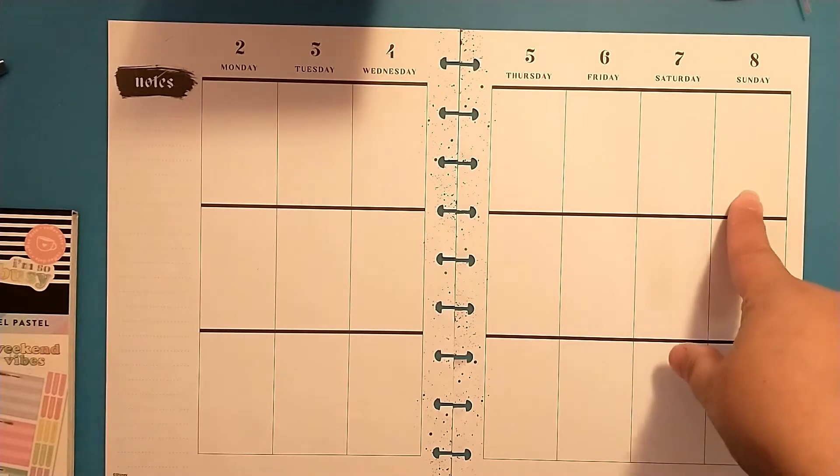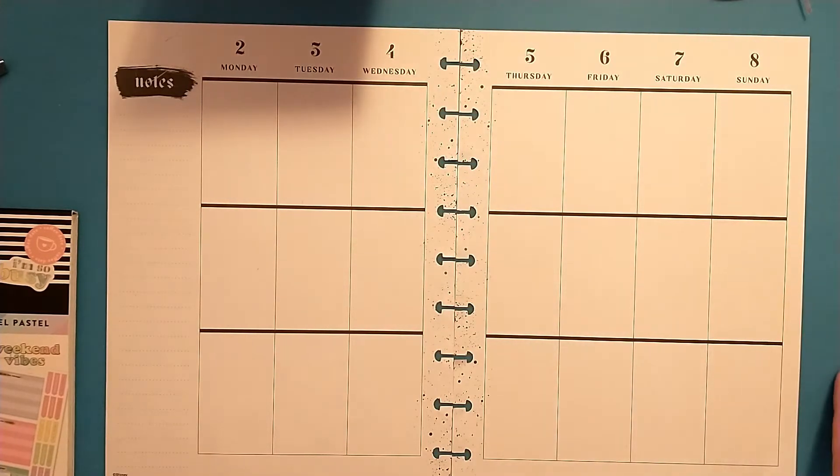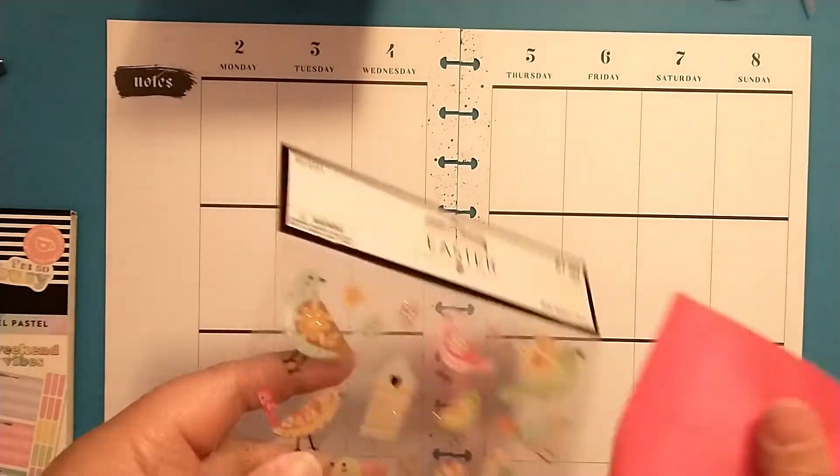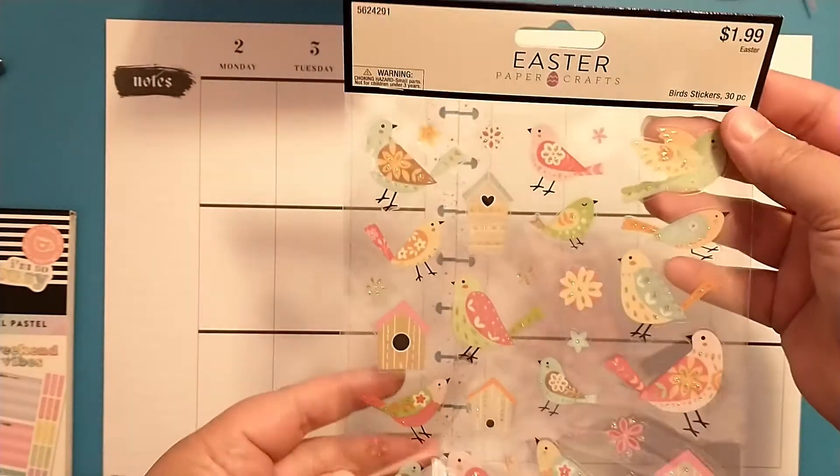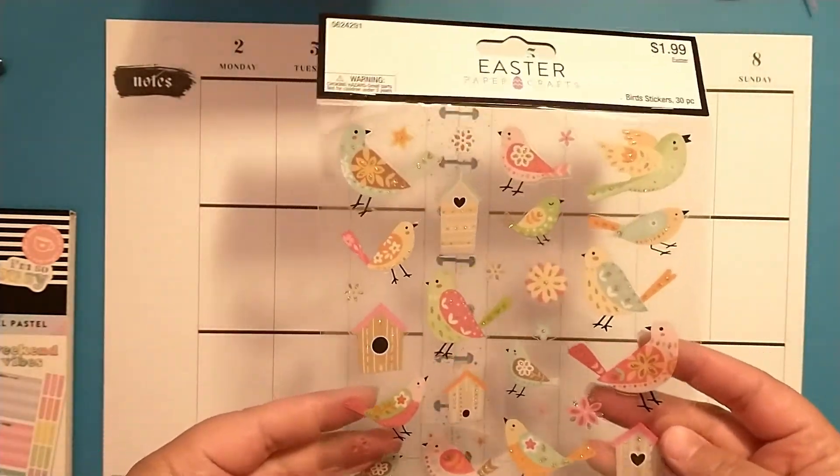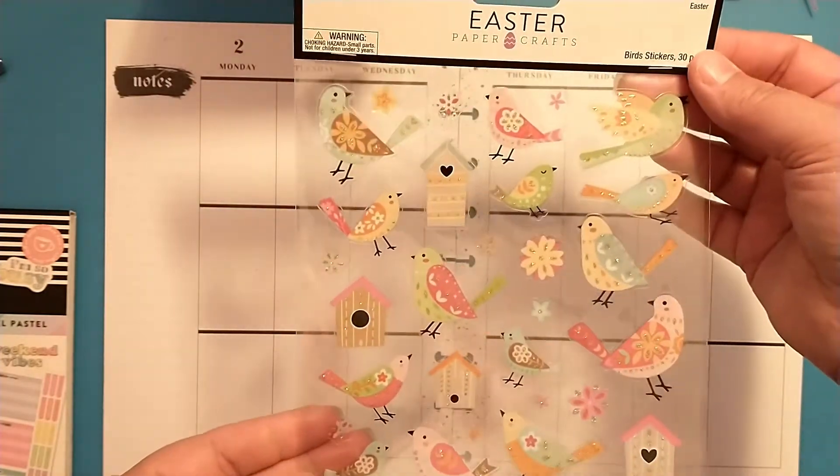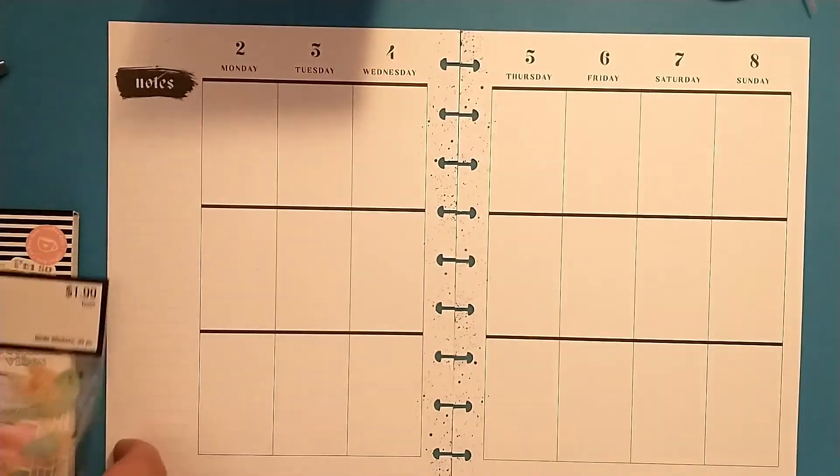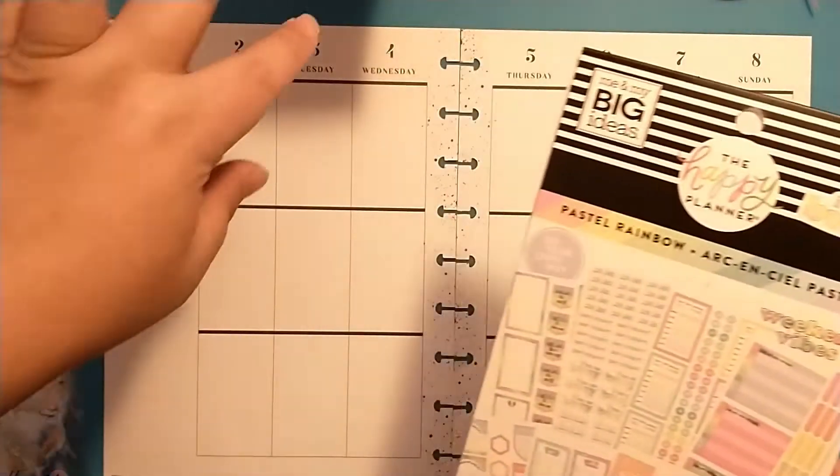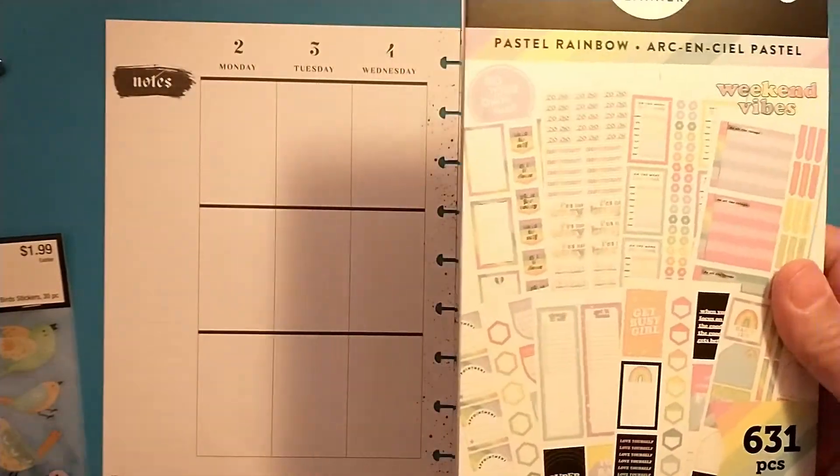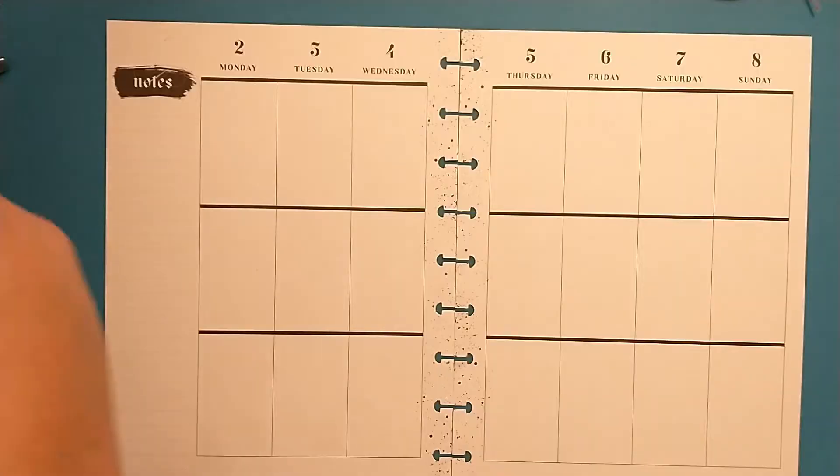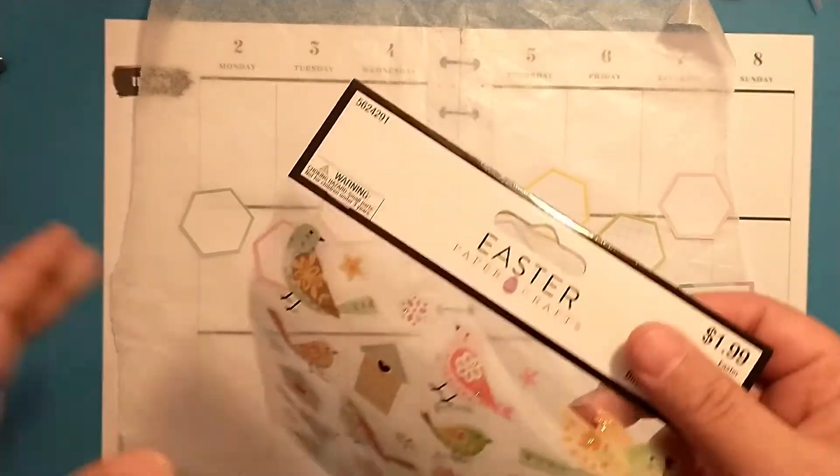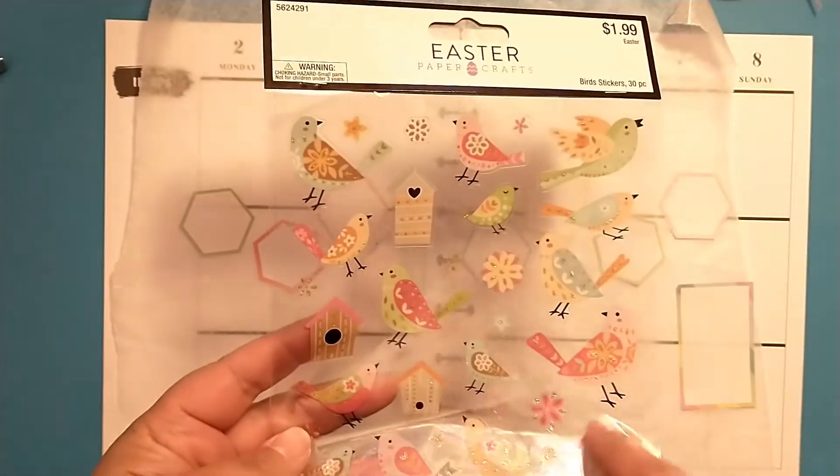And the 8th is Mother's Day, so I thought I would do something that my mom loves. So my mom loves birds and birdhouses, so I found these really cute bird stickers in the Easter section at Hobby Lobby. I picked these up to use for Mother's Day. I've also pulled some stickers from the Pastel Rainbow sticker book and some of these boxes that sort of match the colors that the birds have on them.